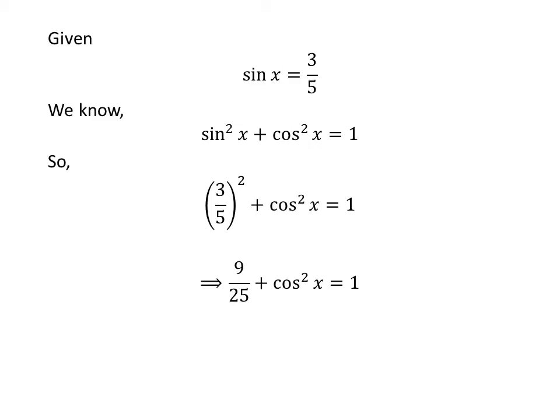We know square of 3 is 9 and square of 5 is 25. So 9 upon 25 plus square of cosine of x is equal to 1. Shifting 9 upon 25 to the right hand side of the above equation gives us square of cosine of x is equal to 1 minus 9 upon 25.